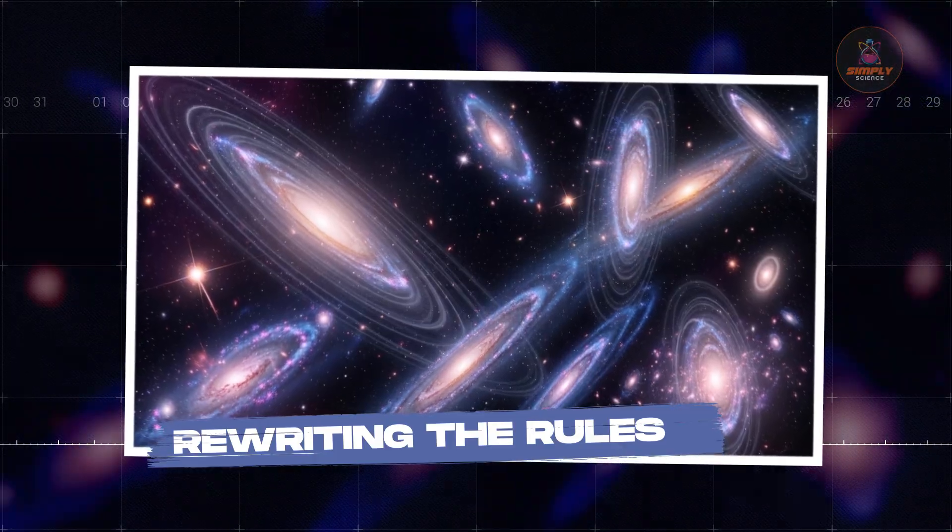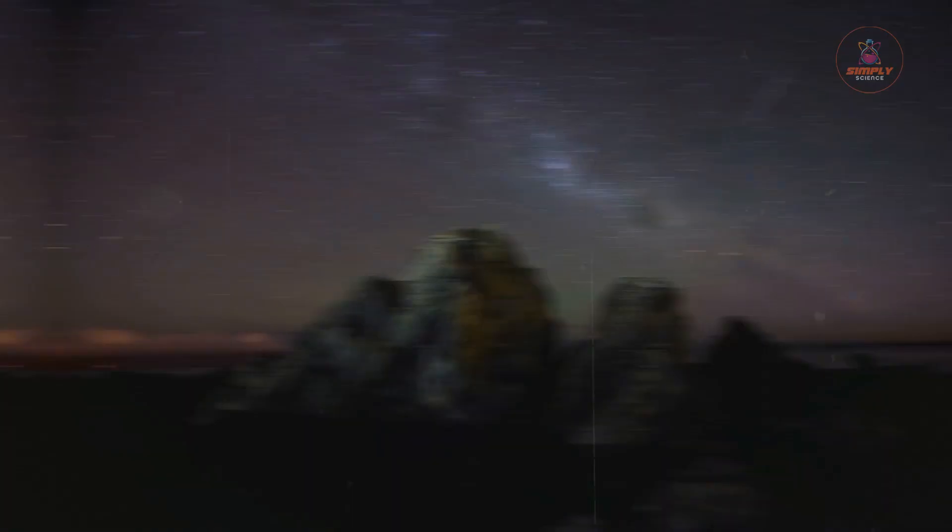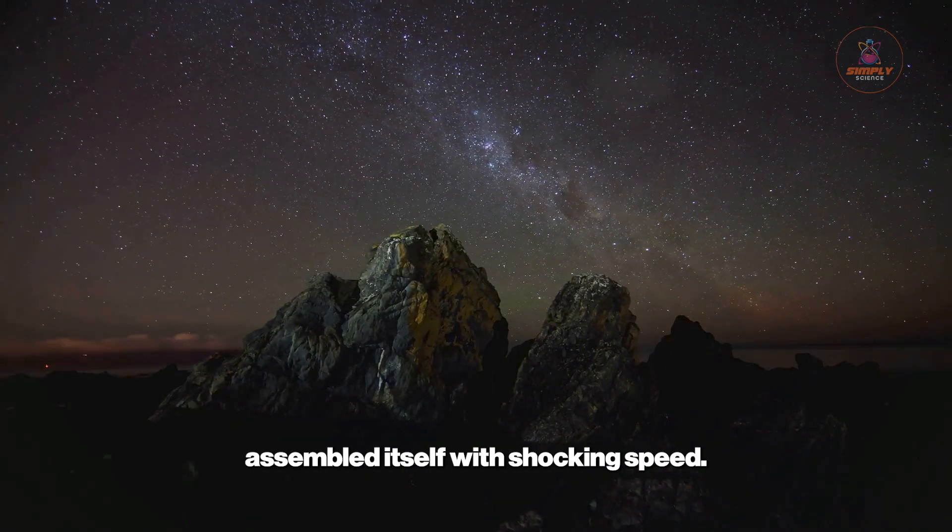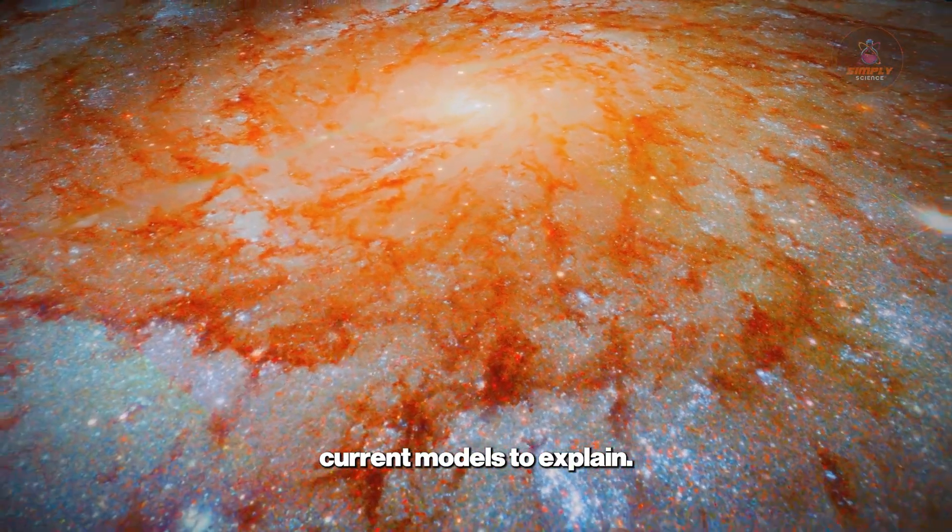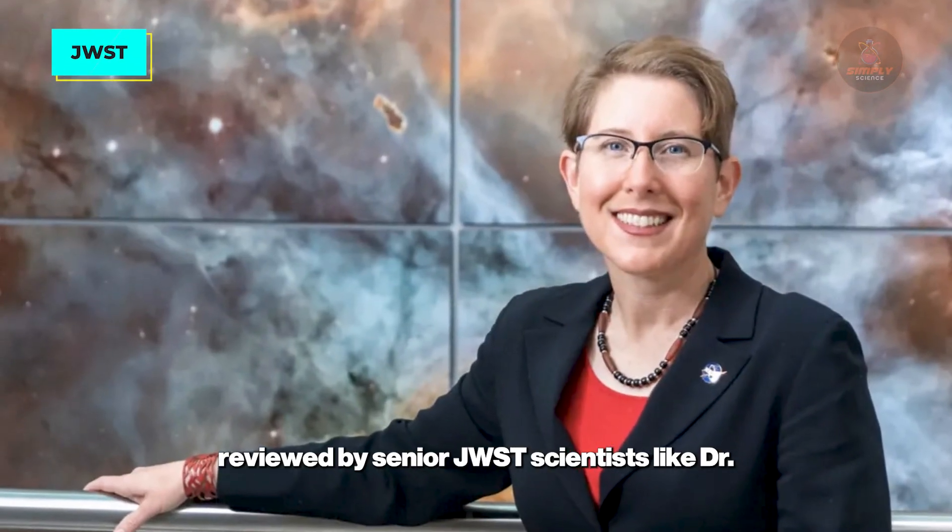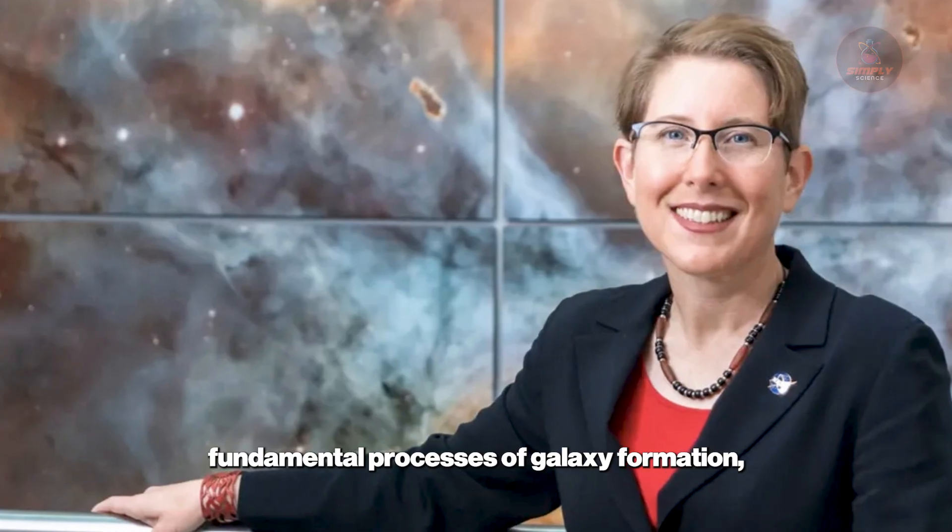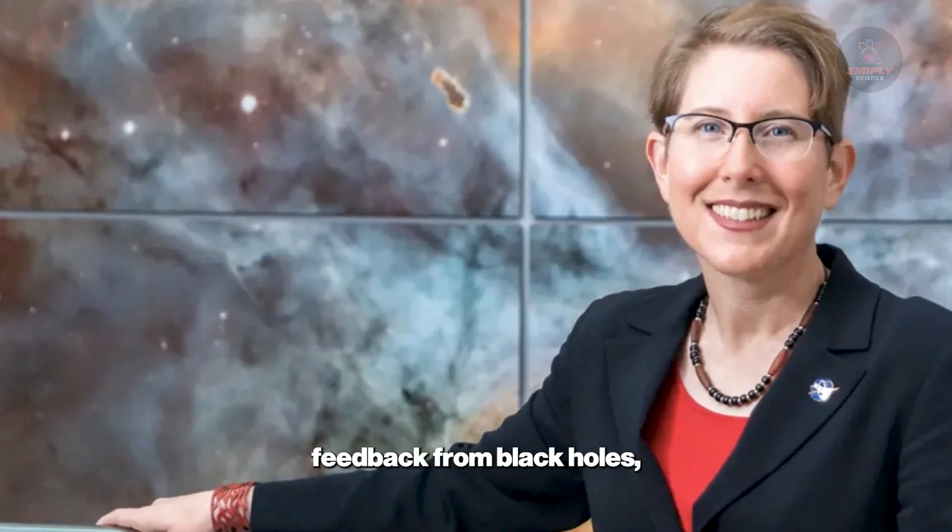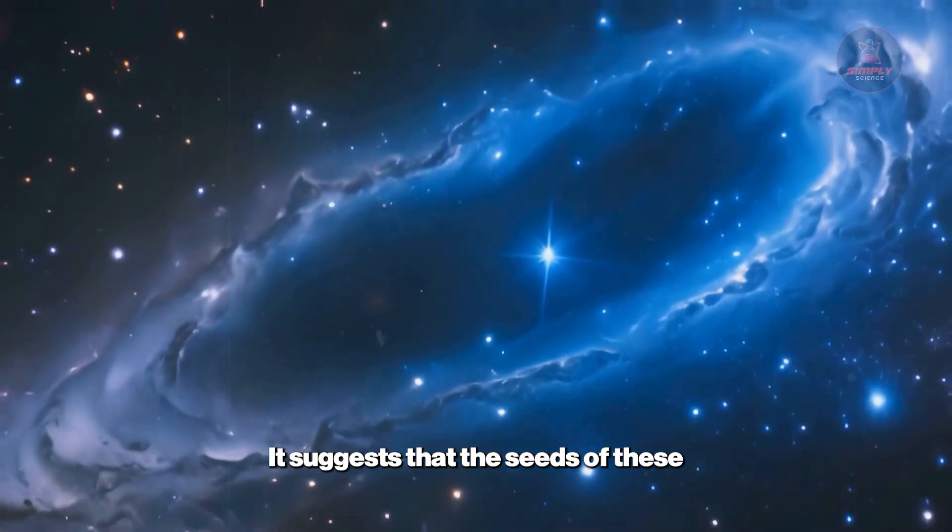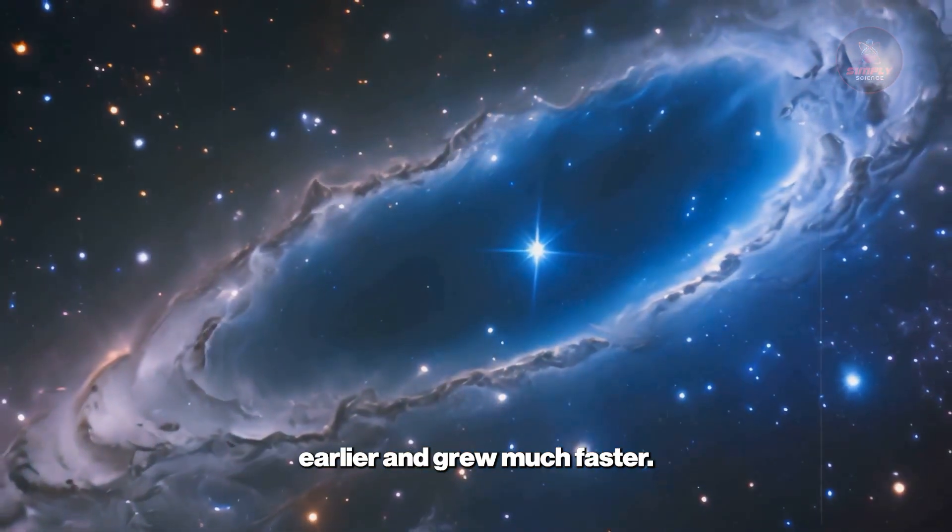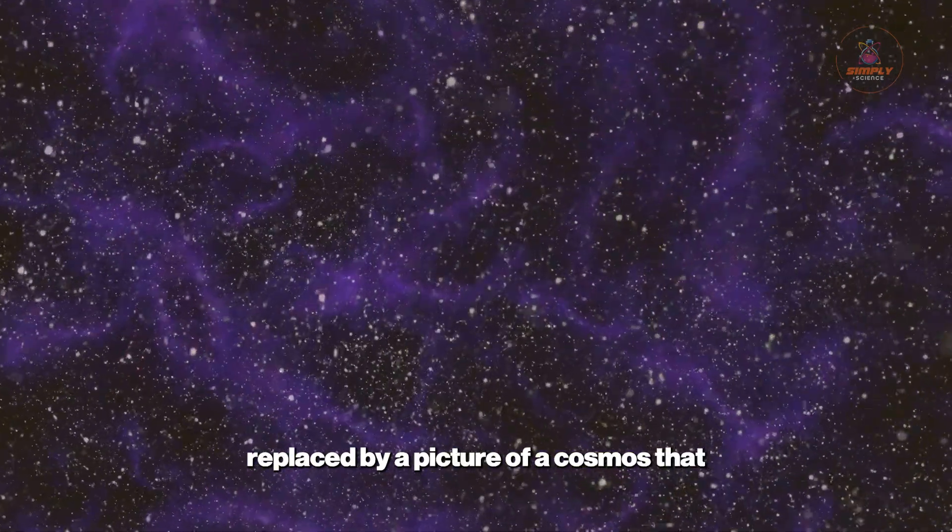Rewriting the rules. The discoveries from the James Webb Space Telescope have thrown our timeline of cosmic evolution into disarray. What we're seeing is a universe that assembled itself with shocking speed. Galaxies were forming, growing massive, and shutting down far too quickly for our current models to explain. The evidence, reviewed by senior JWST scientists like Dr. Jane Rigby, points to a universe where the fundamental processes of galaxy formation, feedback from black holes, and the assembly of dark matter halos must be far more efficient than we ever thought. It suggests that the seeds of these massive structures were planted much earlier and grew much faster. The neat, orderly timeline is gone, replaced by a picture of a cosmos that was complex and structured almost from the very beginning.